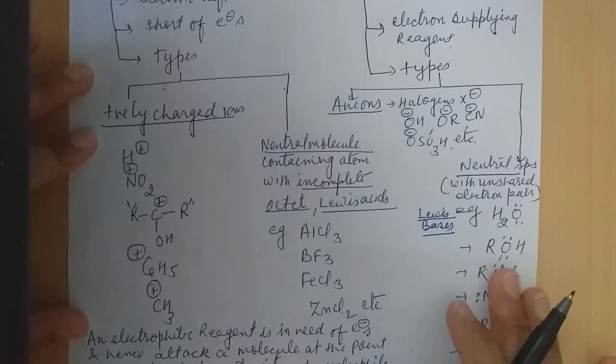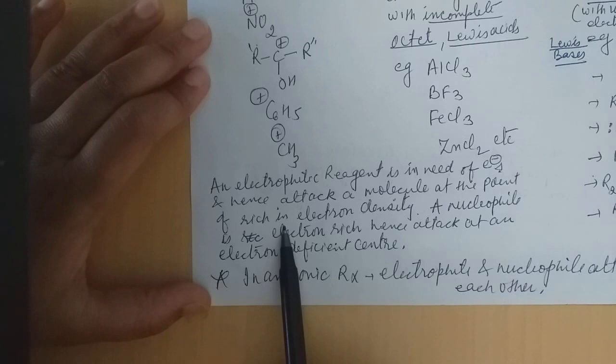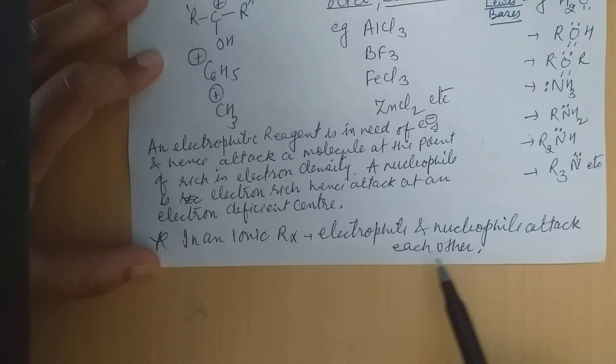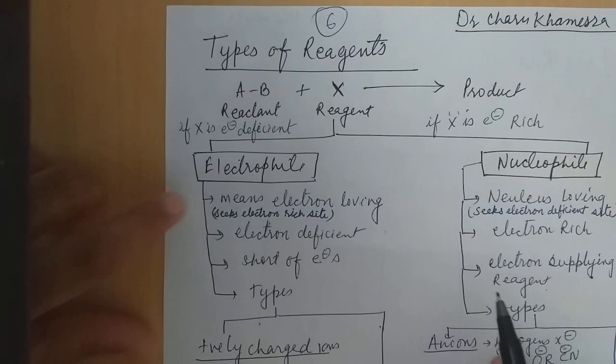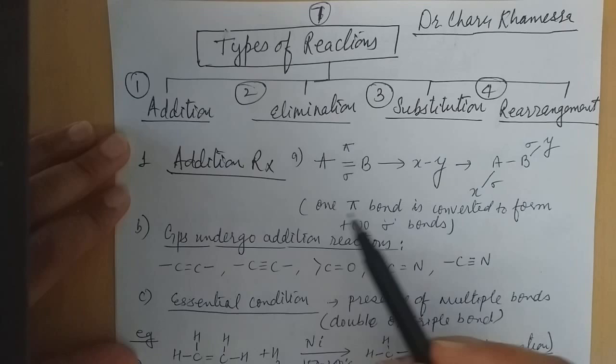This is all about electrophile and nucleophile. An electrophilic reagent is in need of electrons and hence attacks a molecule at the point rich in electron density. A nucleophile is electron rich and hence attacks at the electron deficient center. In ionic reactions, electrophile and nucleophile attack each other. This is all about the types of reagents — electrophilic and nucleophilic.